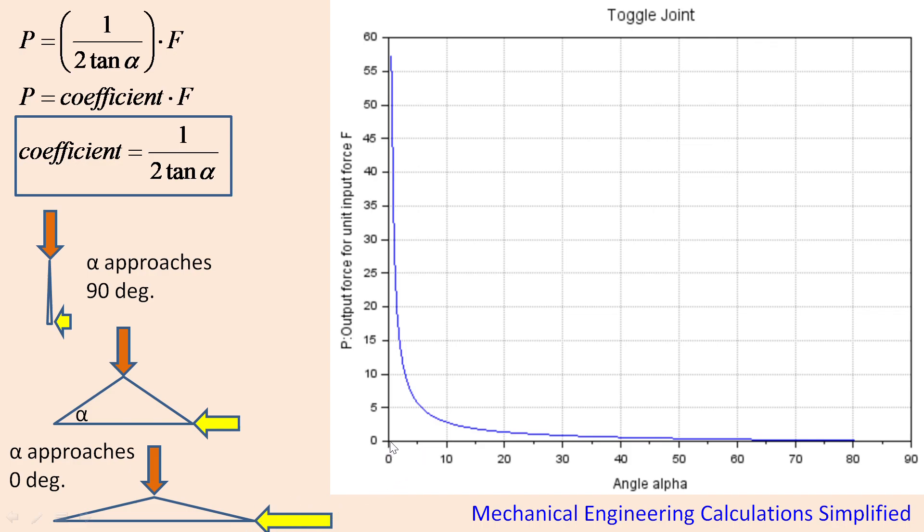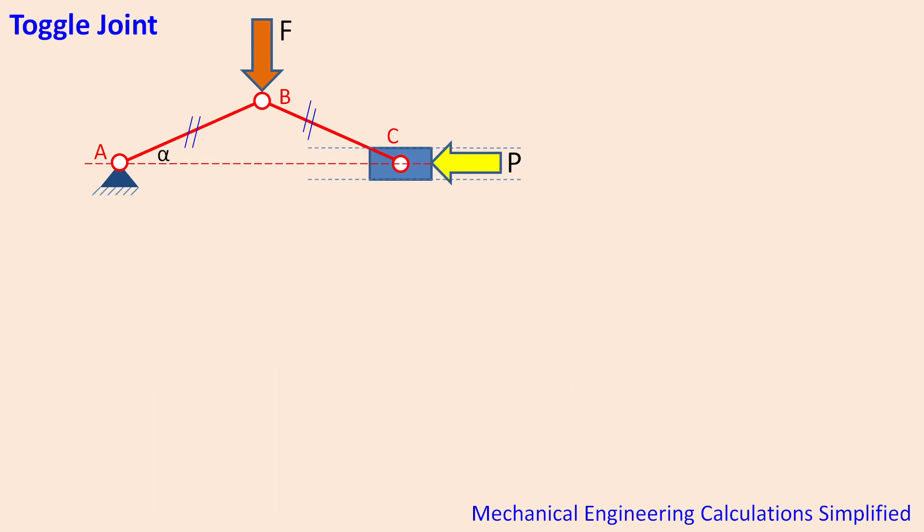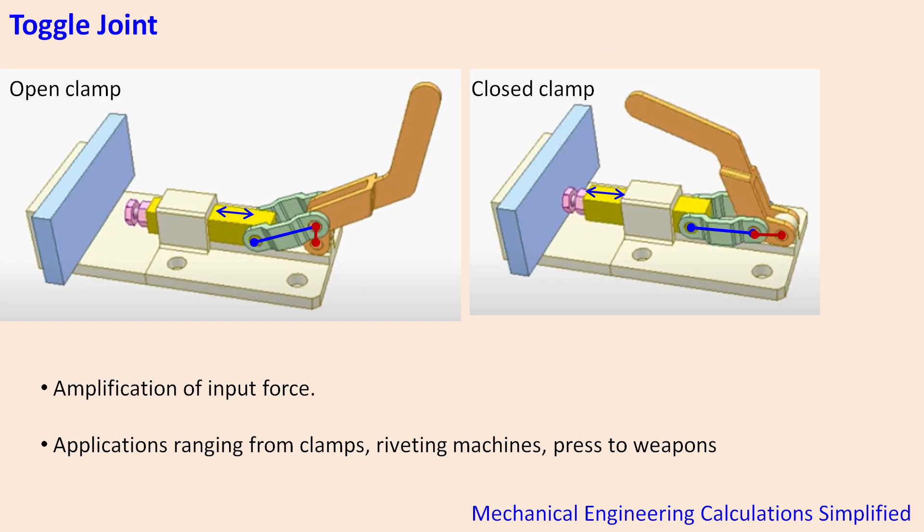So that is the reason we get a highly amplified output force when alpha, when this alpha angle approaches zero. So that is why in the first image if you can see here, the angle between these two links has approached almost zero, that is why giving the maximum amplification possible here.